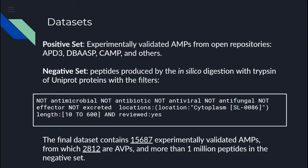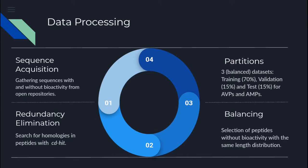The final dataset contains 15,000 experimentally validated AMPs, of which 2,800 are AVPs, and more than 1 million peptides in the negative set. The data processing comprised the following steps: sequences were gathered from the open repositories as described. Next, we performed a homology search with CD-HIT in order to eliminate redundant peptides. We then selected peptides from the negative dataset in the same quantity as in the positive class. Finally, we split the data into three partitions: training with 70% of the sequences, and validation and testing each with 15% of the sequences.